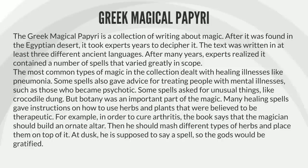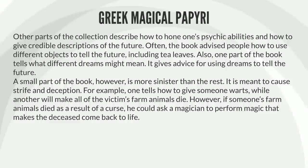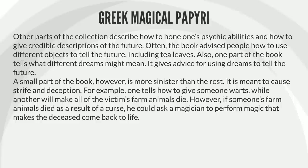Some spells asked for unusual things, like crocodile dung. But botany was an important part of the magic. Many healing spells gave instructions on how to use herbs and plants that were believed to be therapeutic. For example, in order to cure arthritis, the book says that the magician should build an ornate altar. Then he should mash different types of herbs and place them on top of it. At dusk, he is supposed to say a spell so the gods would be gratified. Other parts of the collection describe how to hone one's psychic abilities and how to give credible descriptions of the future. Often, the book advised people how to use different objects to tell the future, including tea leaves.